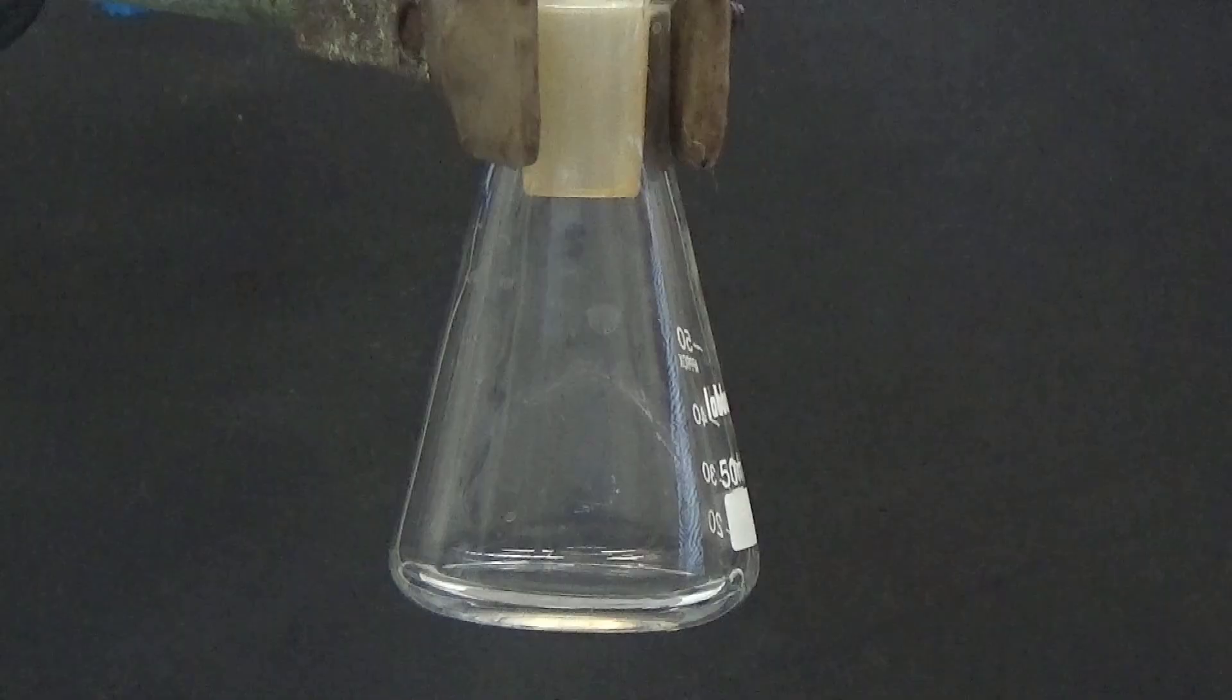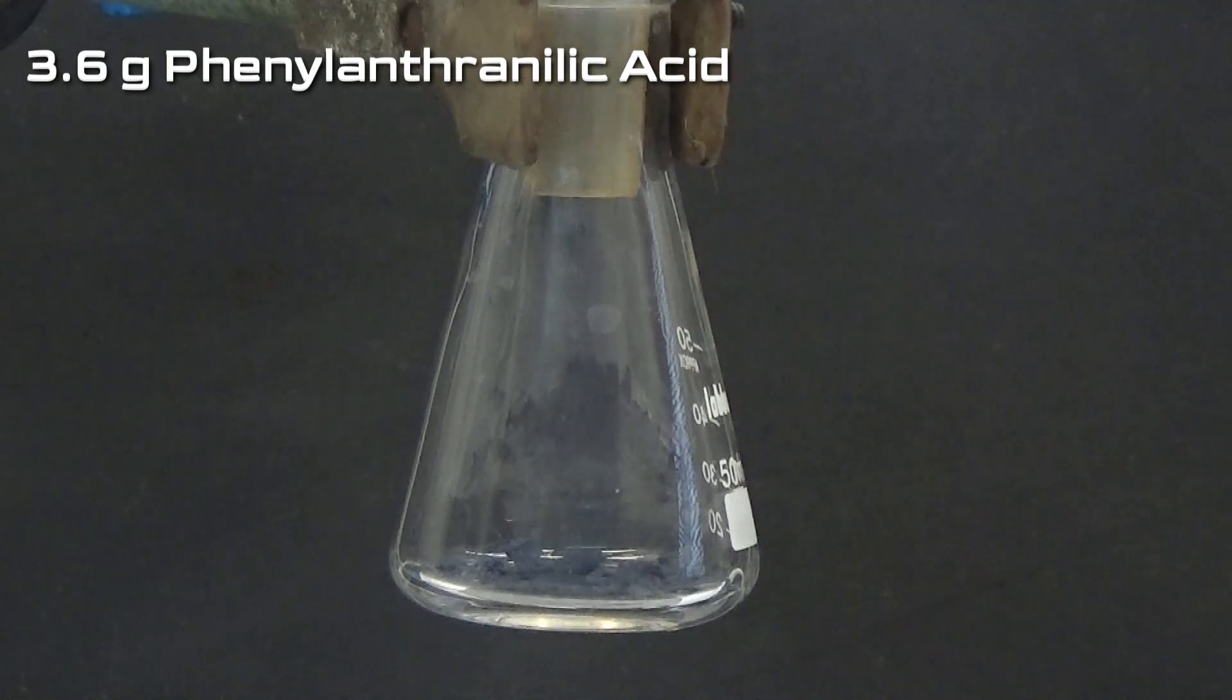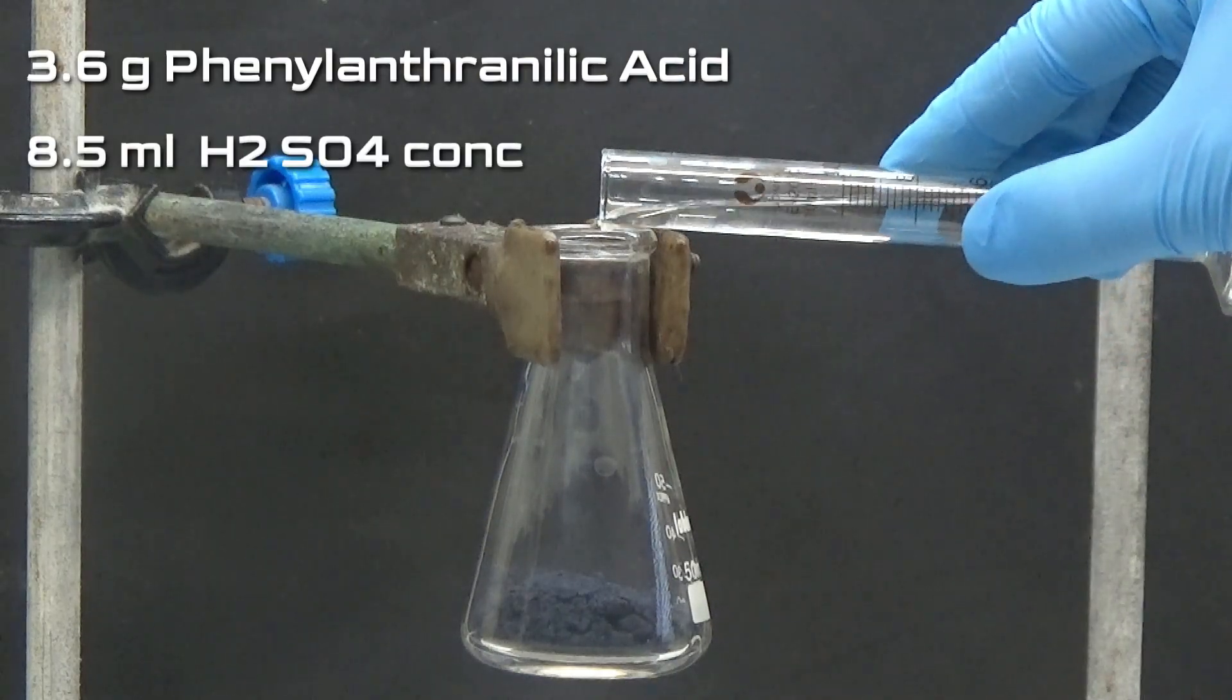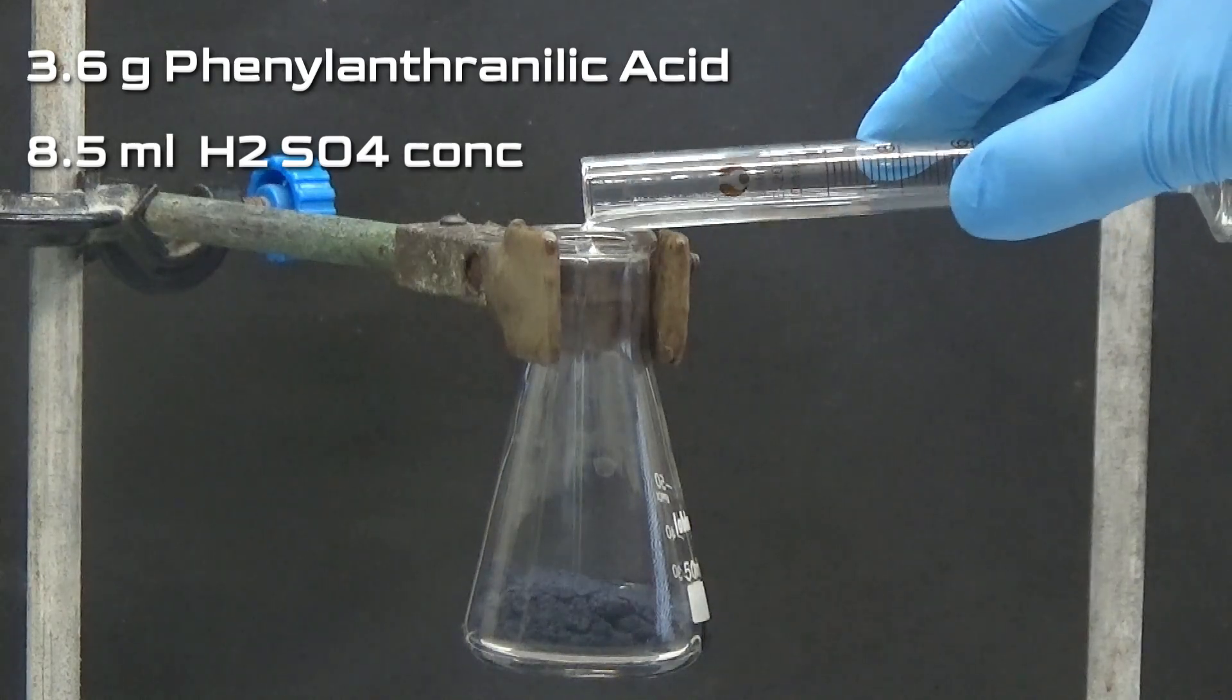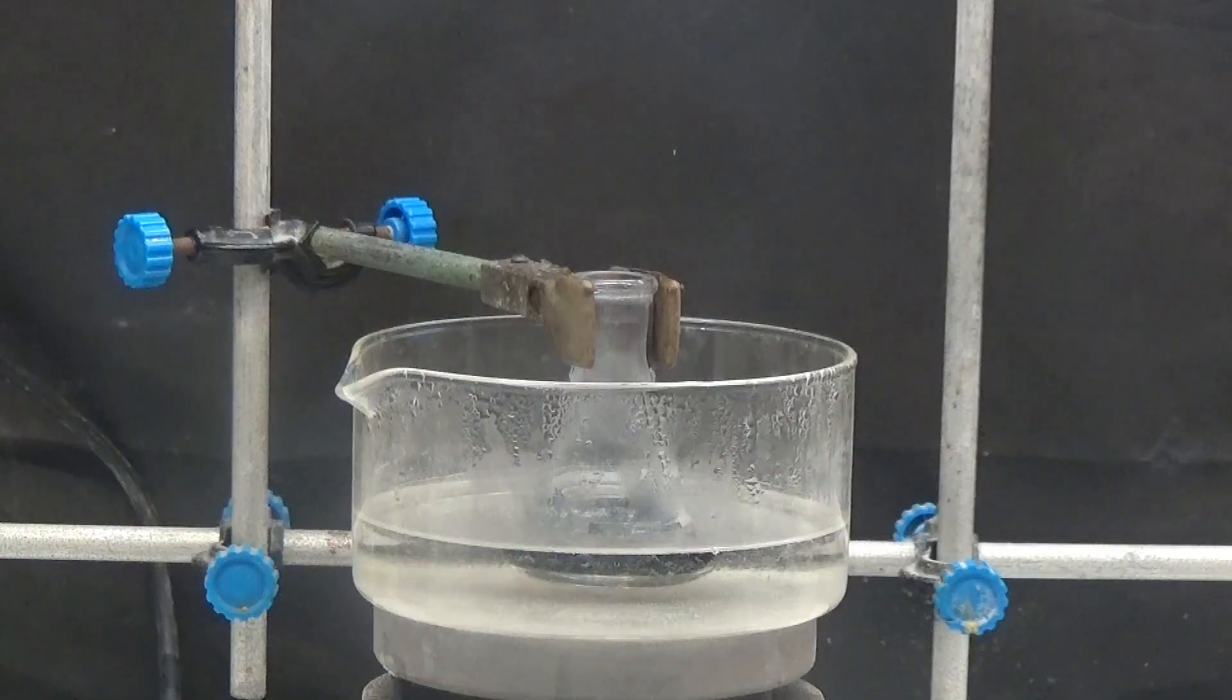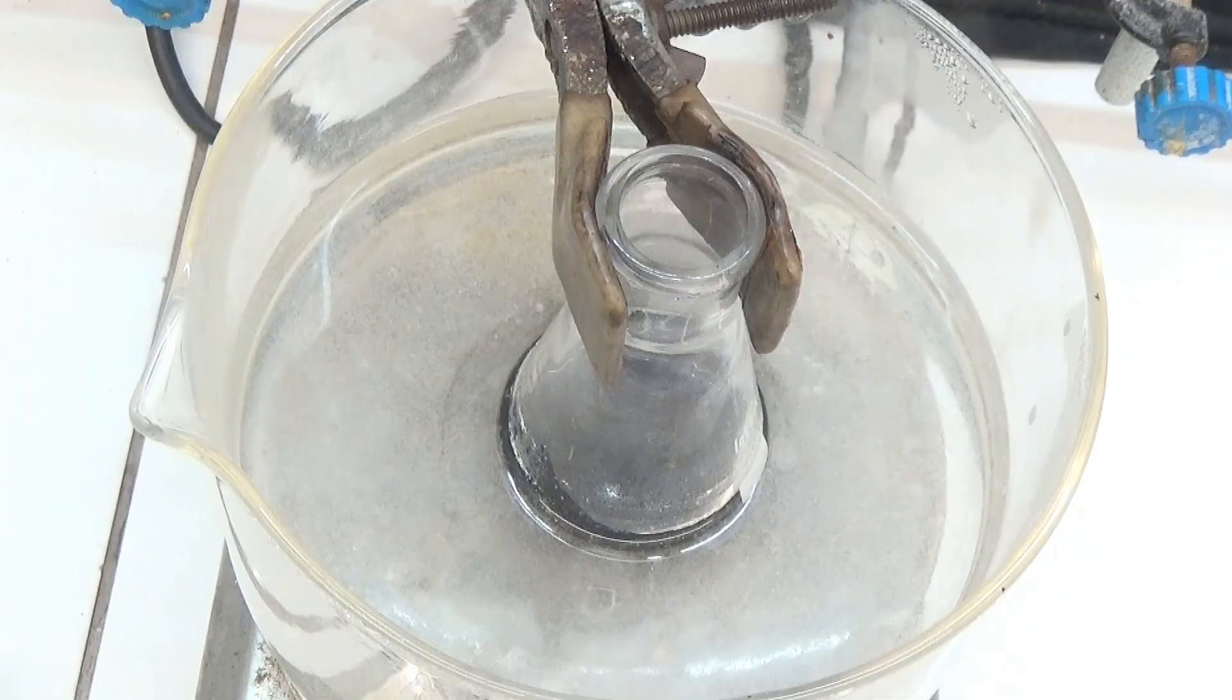In an Erlenmeyer flask of 50 milliliters we put 3.6 grams of phenylanthranilic acid and slowly add 8.5 milliliters of concentrated sulfuric acid to heat during 4 hours in a water bath.